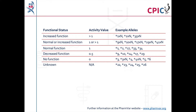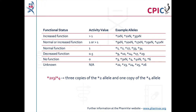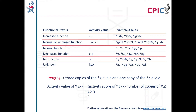Alleles which are present in multiple copies are given the suffix XN, where N is the number of copies of that allele present in a genome. For example, a patient with the genotype star 2 X3 star 4 has three copies of the star 2 allele and one copy of the star 4 allele. The activity score of alleles present in multiple copies is calculated by multiplying the activity score for the allele by the number of copies present. In this case, the activity score of star 2 X3 is 1 multiplied by 3, which equals 3. Further information about CYP2D6 alleles can be found at the PharmVar website at www.pharmvar.org. A link to PharmVar is also given in the description below this video.